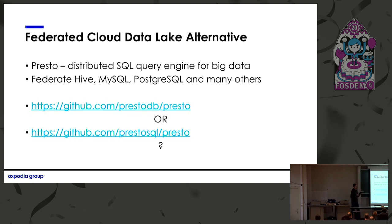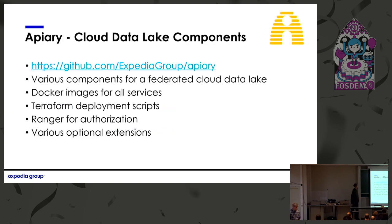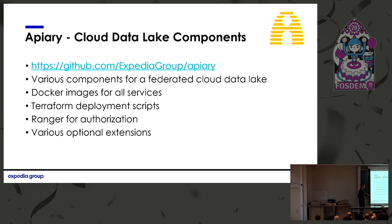There are other alternatives for federated queries. Presto is a distributed SQL query engine for big data that can federate Hive and also MySQL, Postgres, and many others. The big problem is there's been a major disagreement in the community resulting in a fork — there are two versions of Presto with the same name and separate foundations, so good luck picking the winner. To make setting up and maintaining all of this easier, we built an umbrella project called Apiary, where we put all of these components so you can pick and choose the bits you want. It includes Docker images for all the services, Terraform deployment scripts for networking, load balancing, and infrastructure, and a range of authorization and optional extensions.